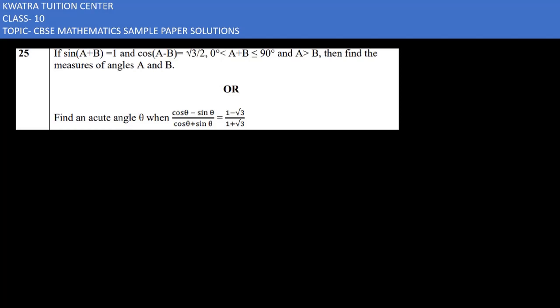Let's start with question number 25. Here it says we have sine of a plus b equals 1 and the other value is cos of a minus b equals root 3 over 2, and we have to find the measurement of angles a and b.